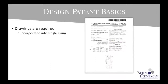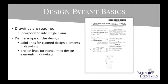Every design patent claim includes the words 'as shown,' which means the drawings are absolutely required for design patents. They're not just exemplary illustrations like they are for utility patents — the drawings are part of the claim, and the particulars of the drawings define the scope of the claim. The most important way to control the scope is how the lines are drawn. Solid lines put something within the scope of the claim — this is the design, this is what I am claiming. Dotted lines put something outside the scope of the claim — this is just for context, don't hold me to this.